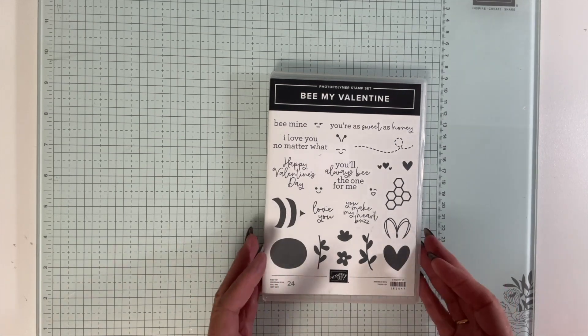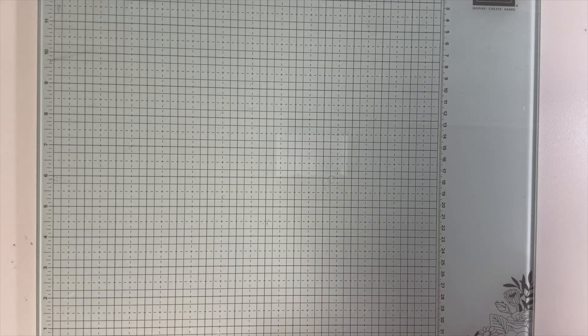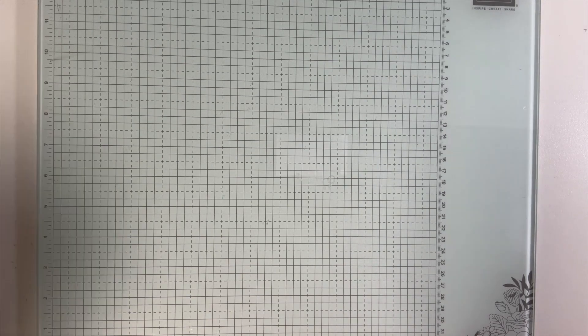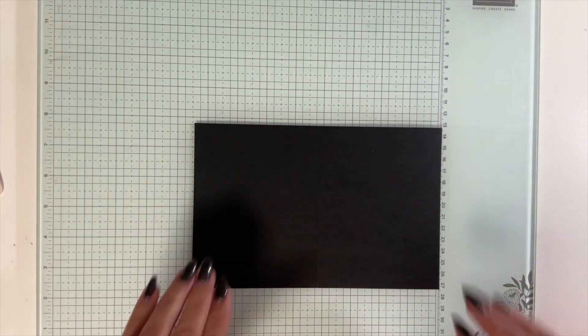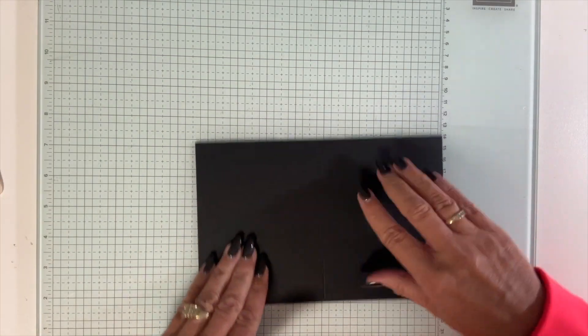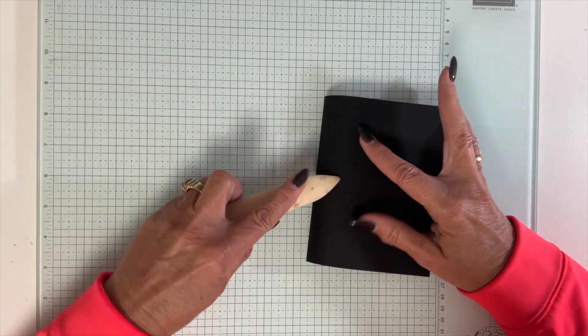We're going to use Be My Valentine again, and this time we are also going to pull from another die set that is not new - it's in the annual catalog. For starters we will start with black cardstock, this is 8.5 by 5.5 inches, and I already scored it in half on the 8.5 inch side at 4.25.